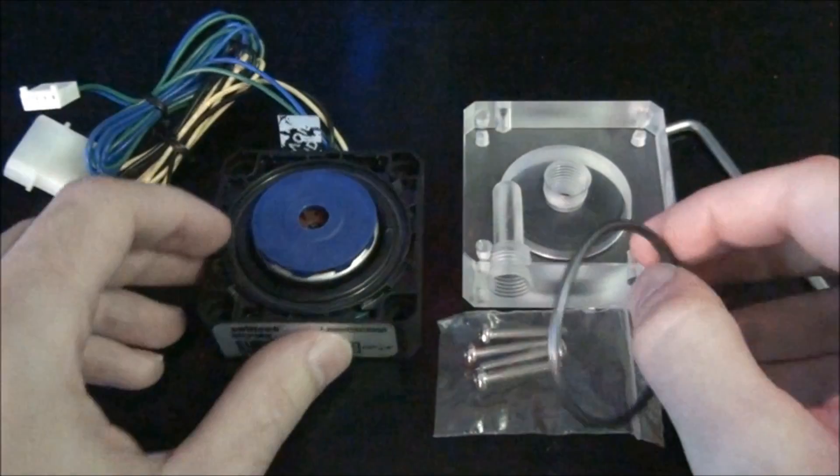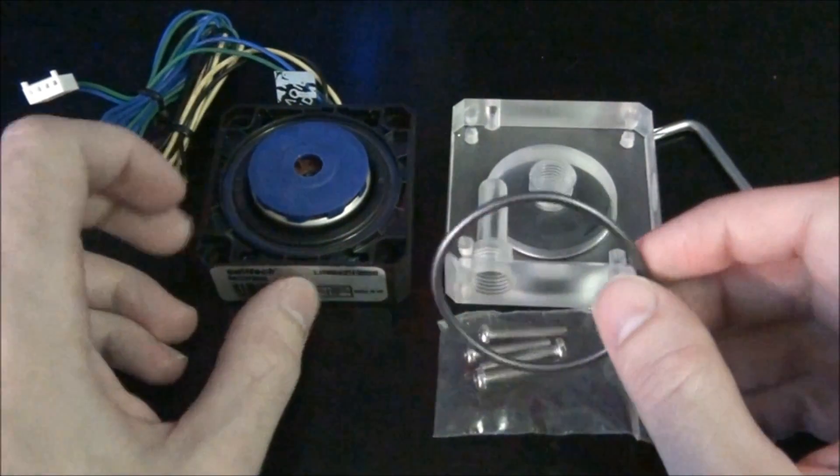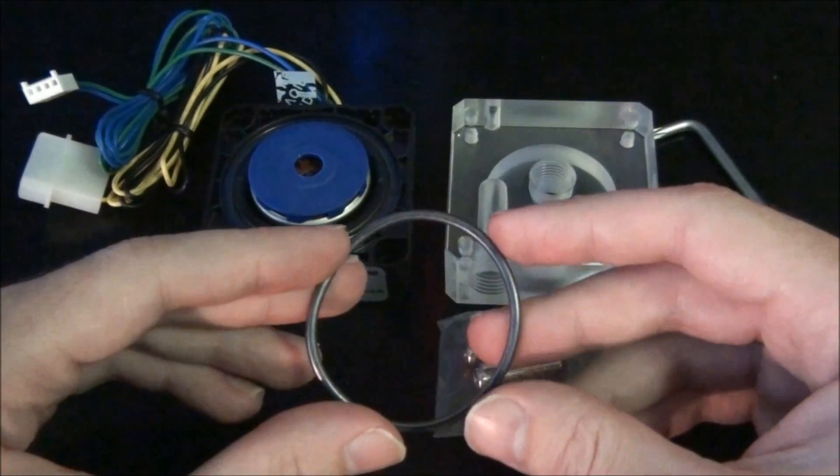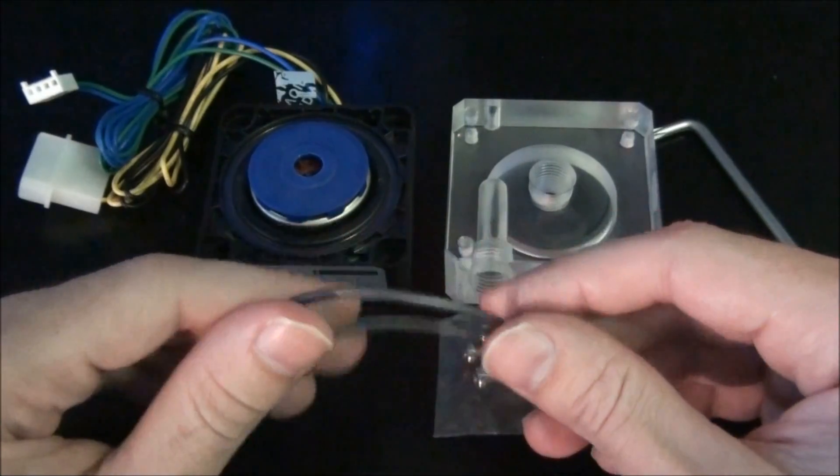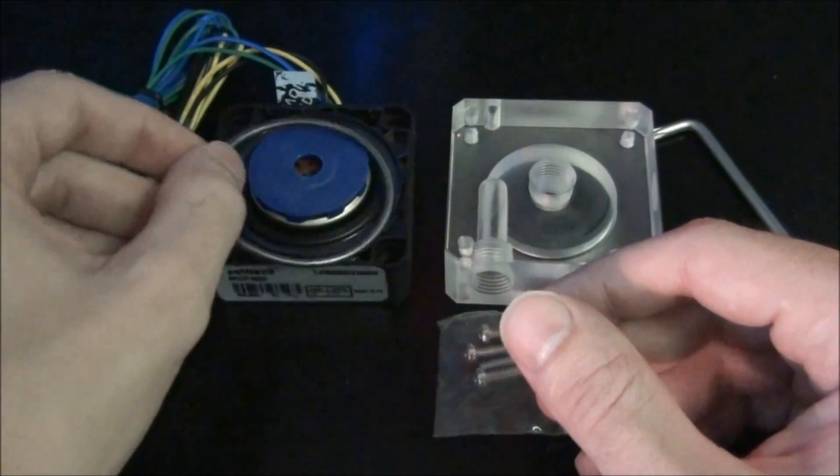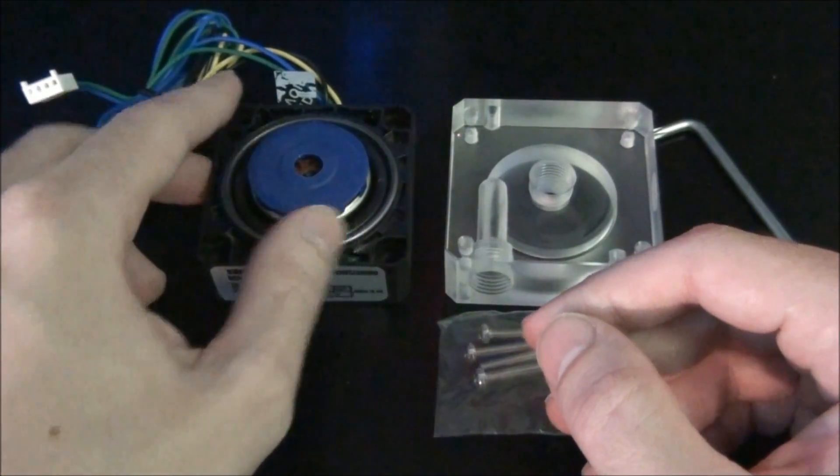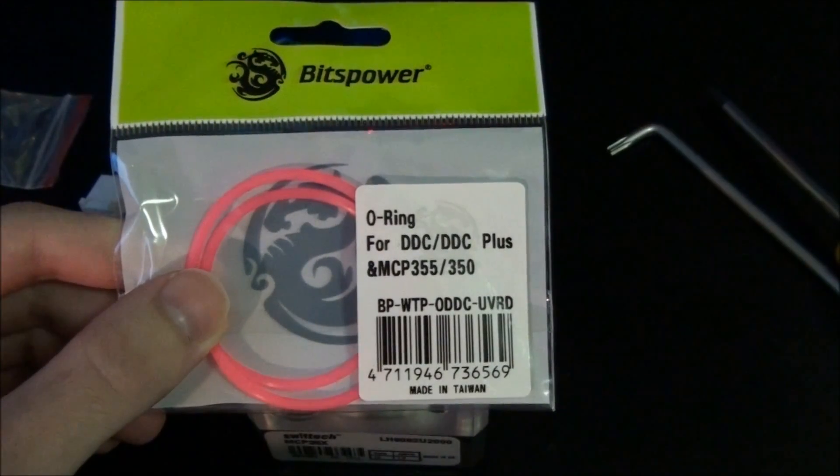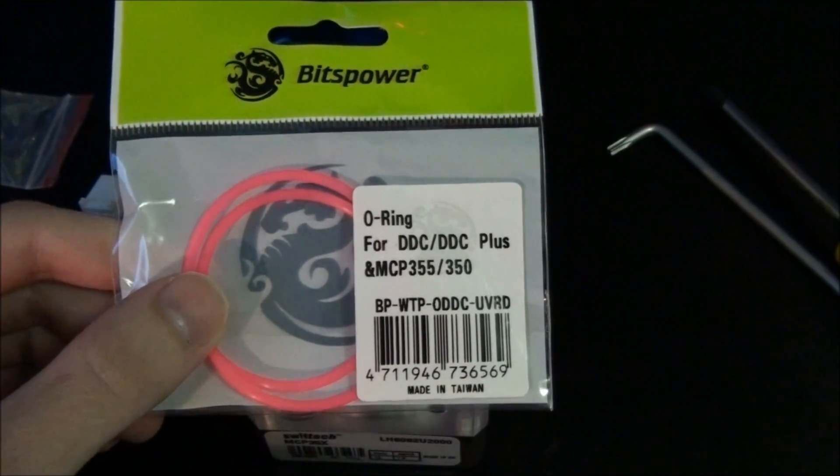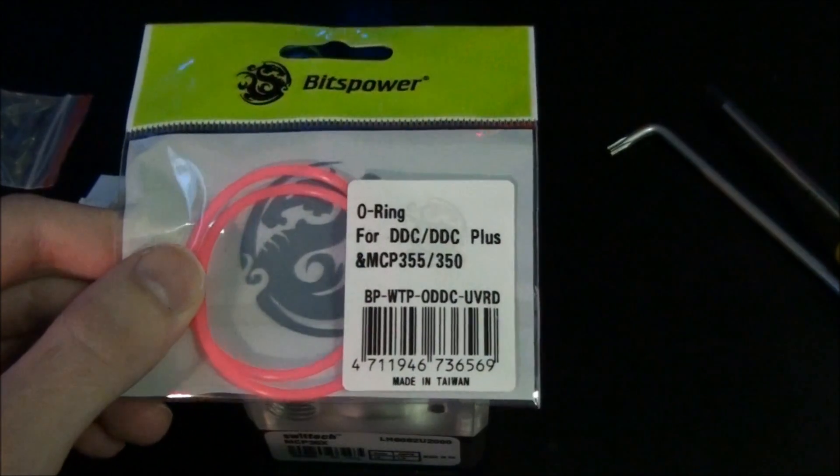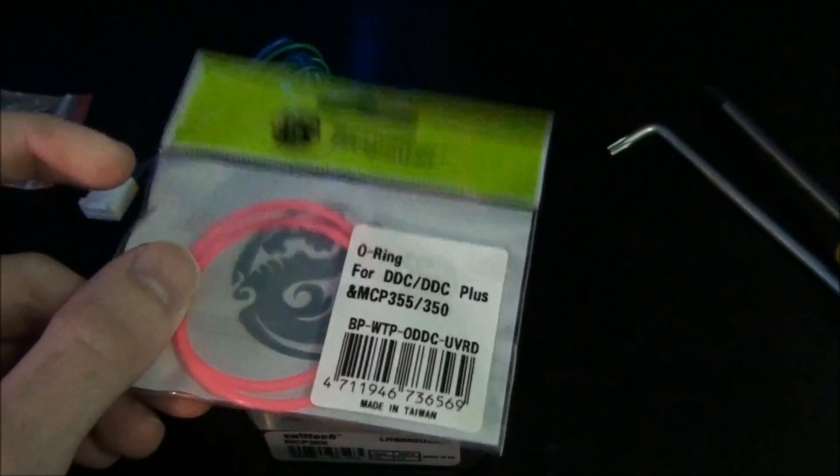Now this is very important. In some cases your new pump top will come with a new o-ring. And if that's the case, you need to use that new o-ring. If not, then using the old one is not a problem. You can actually get different coloured o-rings from Bits Power. These are red UV reactive o-rings. I know they look very pink. This pump top comes with four new screws, quite different to the old ones.